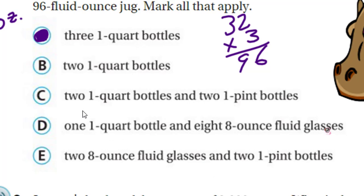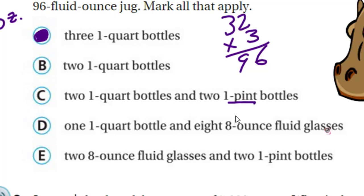Option B is two one-quart bottles. We just figured out three was 96 — two one-quart bottles won't be enough, so sorry, B, we're going right on by. Option C is two one-quart bottles and two one-pint bottles. Here we go with pints — there are 32 ounces in one quart, so the question becomes how many ounces are in one pint.